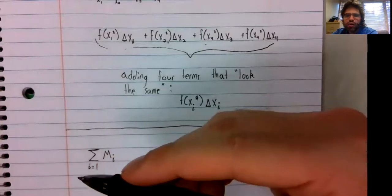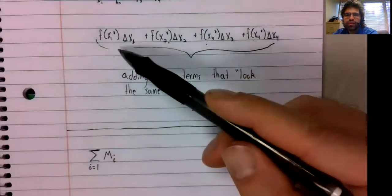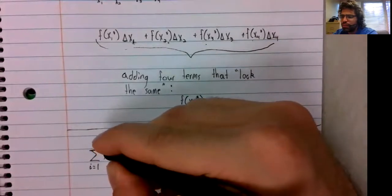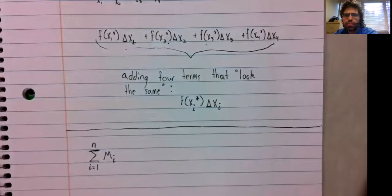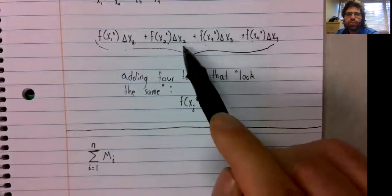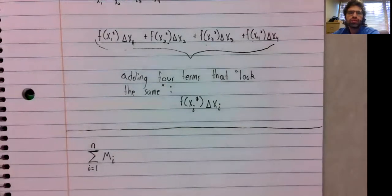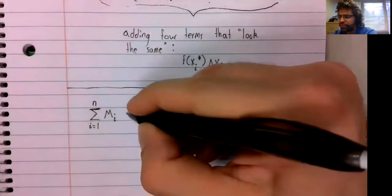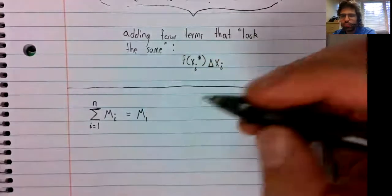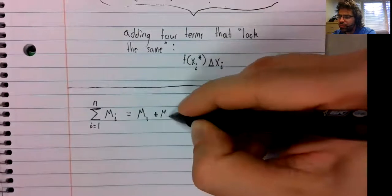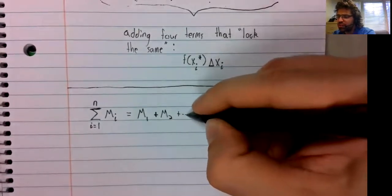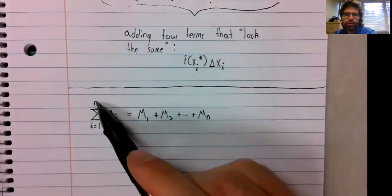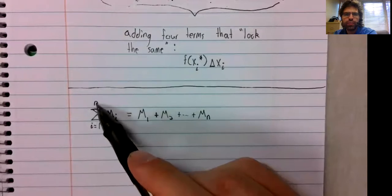And I starts somewhere. In this case, it starts at one. And it counts up until it reaches some number. In this case, it counts up one, two, three, four. And at four, it stops. This is M sub one plus M sub two plus, and we keep going until we reach whatever number we have up here. And then we stop.